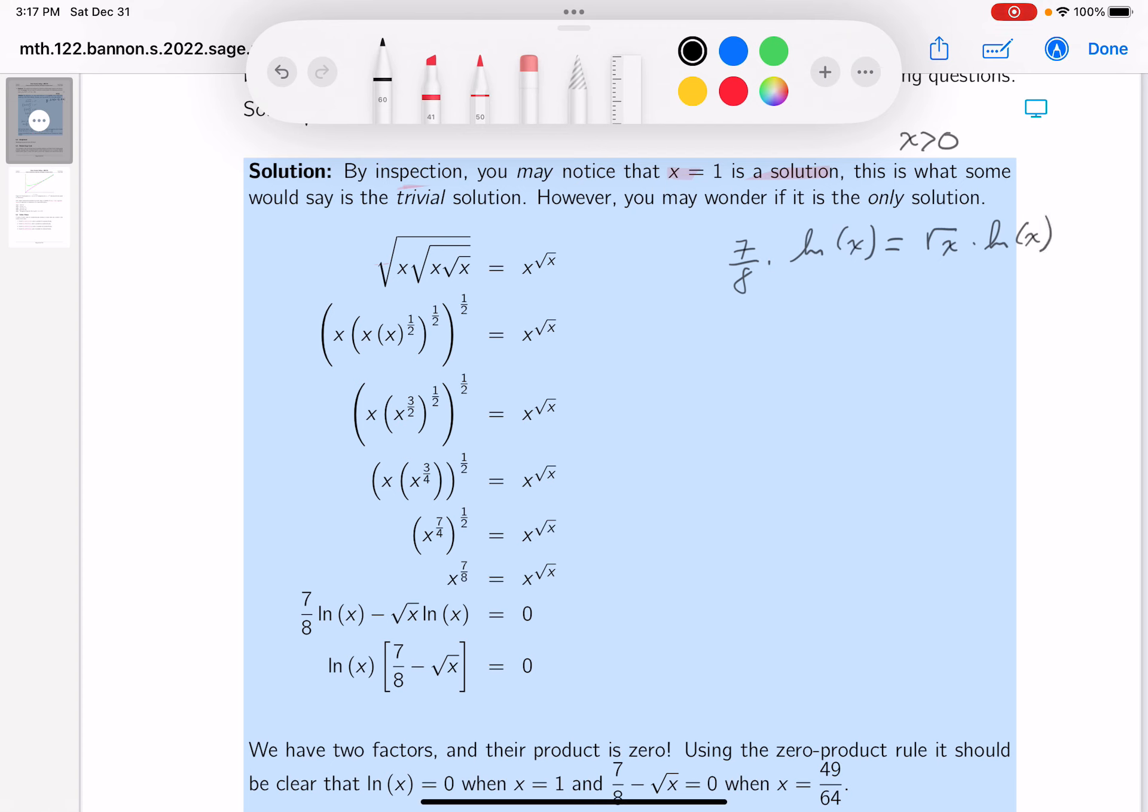All right? Again, it may look worse to you, but I think what I want to do is get everything on the one side and then use the zero product rule. Let's put that down. So we're going to get 7 eighths natural log of x minus the root of x natural log of x equals 0. I'm going to factor out a natural log, and you get 7 eighths minus the root of x equals 0. Zero product rule says state the factors equal to 0. So ln x equals 0. Or the other guy would be when 7 eighths minus the root of x equals 0.